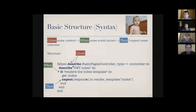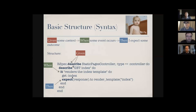Then you `expect(response).to render_template` index. It's very similar in that you do the same steps as Rails minitest/test unit, but the syntax is a little different. That's one of the reasons some people don't like RSpec — they have to learn a somewhat different language. But if you break it down, it's not that complicated: you describe stuff, it does something, then you expect something. The `expect` part is equivalent to an assertion in test unit.